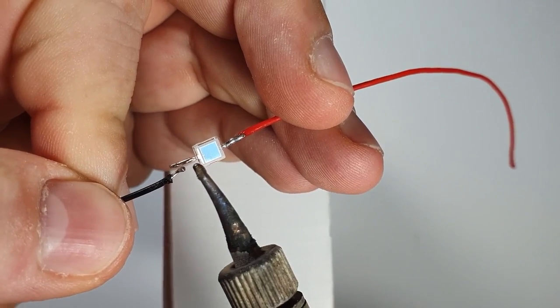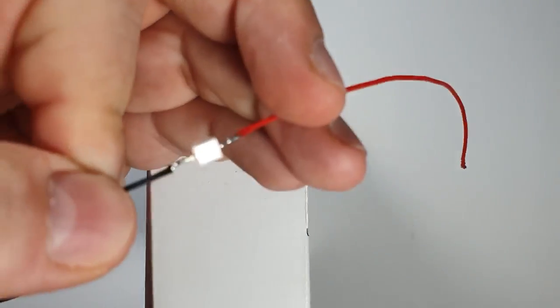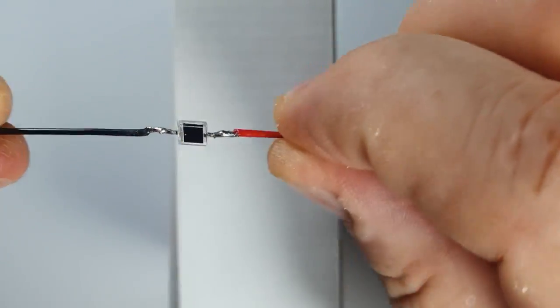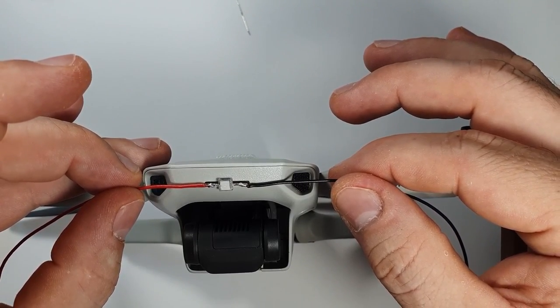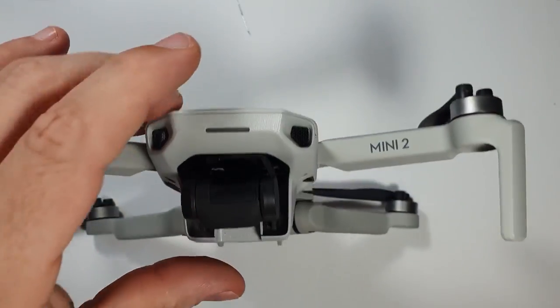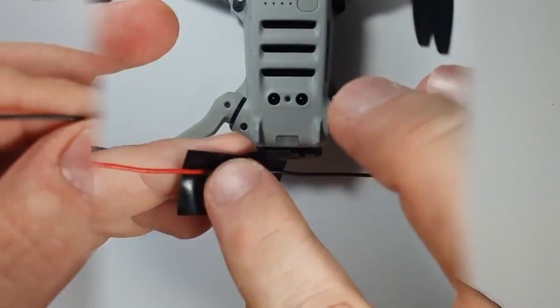So this is the photodiode. I just straightened the legs and soldered two wires on it in this fashion. This is going to sense the light of the front LED which can be turned on from the remote at any point, and that is going to trigger the drop mechanism.